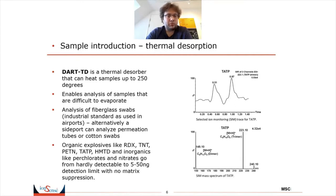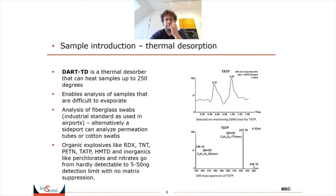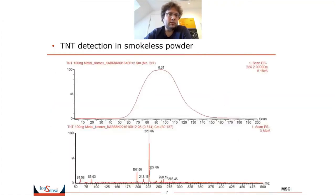Many kinds of organic explosives do not analyze well on a standard DART system, and some also give a lot of matrix suppression. But with the thermal dissolver, both organic explosives and inorganics like perchlorates and nitrates can reach very nice detection limits of around 50 to 55 nanograms. An example is TNT in smokeless powder — the powder is introduced into the DART and you get a very clear signal indicating TNT.